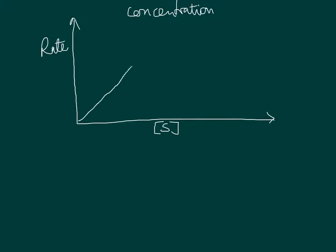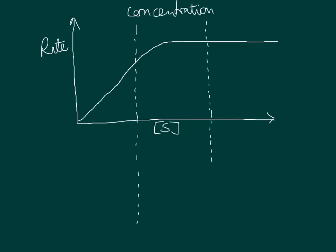On the graph, initially the rate of reaction increases, it reaches a maximum or optimal rate of reaction and then levels off. I find it helpful to explain this in three parts: when the substrate concentration is low, when it begins to level off, and the third stage where there's no further effect of increasing substrate concentration.